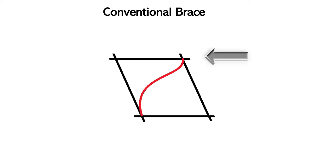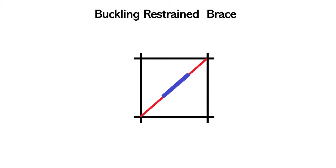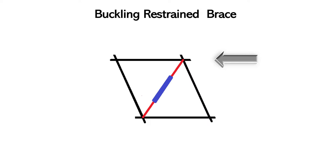Comparing with conventional bracing: when a lateral push is applied, the member under compression will buckle in a conventional system, because buckling is the weakest phenomenon of a slender member before yielding. But with a buckling restrained brace frame, when the same lateral seismic push is applied, the slender yielding core instead shrinks and undergoes inelastic deformation rather than buckling.